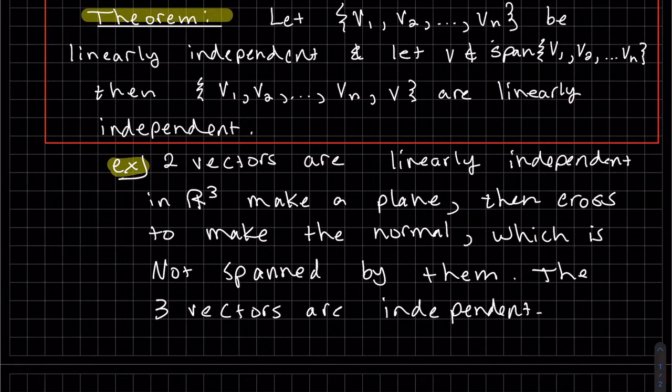So what we have here is if we have two vectors in R3 and they're independent and they make a plane, when we cross them, they make the normal, which we know is independent and also they are not spanned. So together, all three of them are independent.